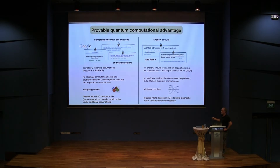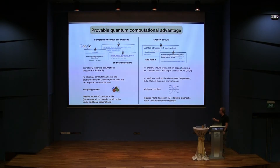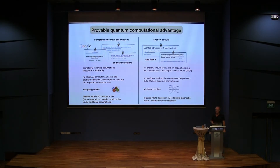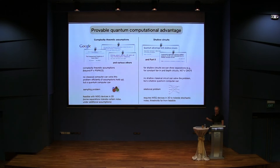In this case, we're looking at relational problems — we're looking at all the inputs and outputs, and they need to satisfy certain relations for us to decide that the problem is solved. We can make some statements about noise tolerance in this case. However, the noise thresholds we would need to really implement this are far from what is currently available, so it seems like this approach will not immediately lead to quantum computational supremacy experiments.